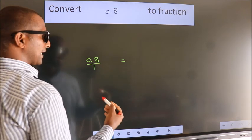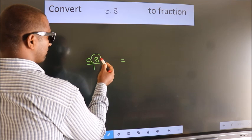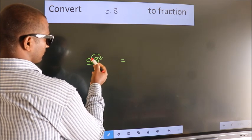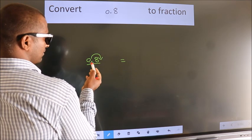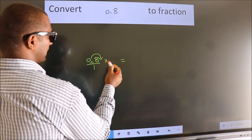For that to happen, we should shift this decimal after one number. To shift this decimal after one number, we have to multiply it by 10.